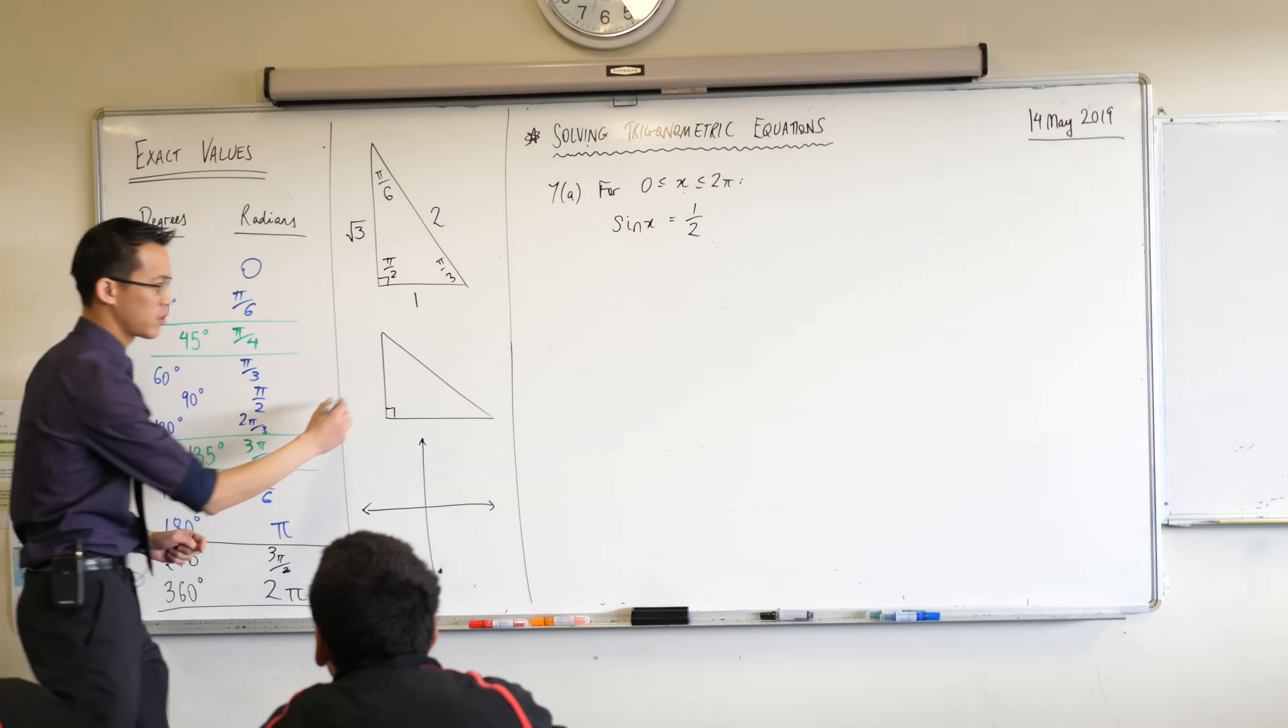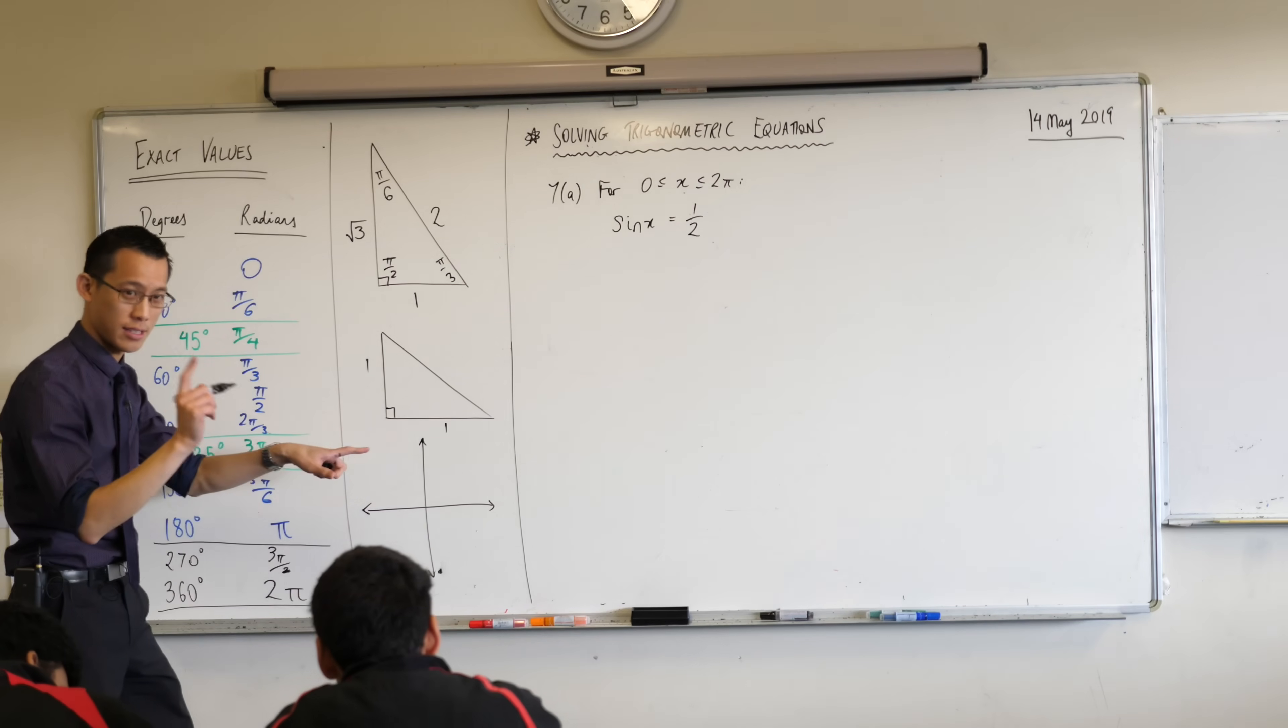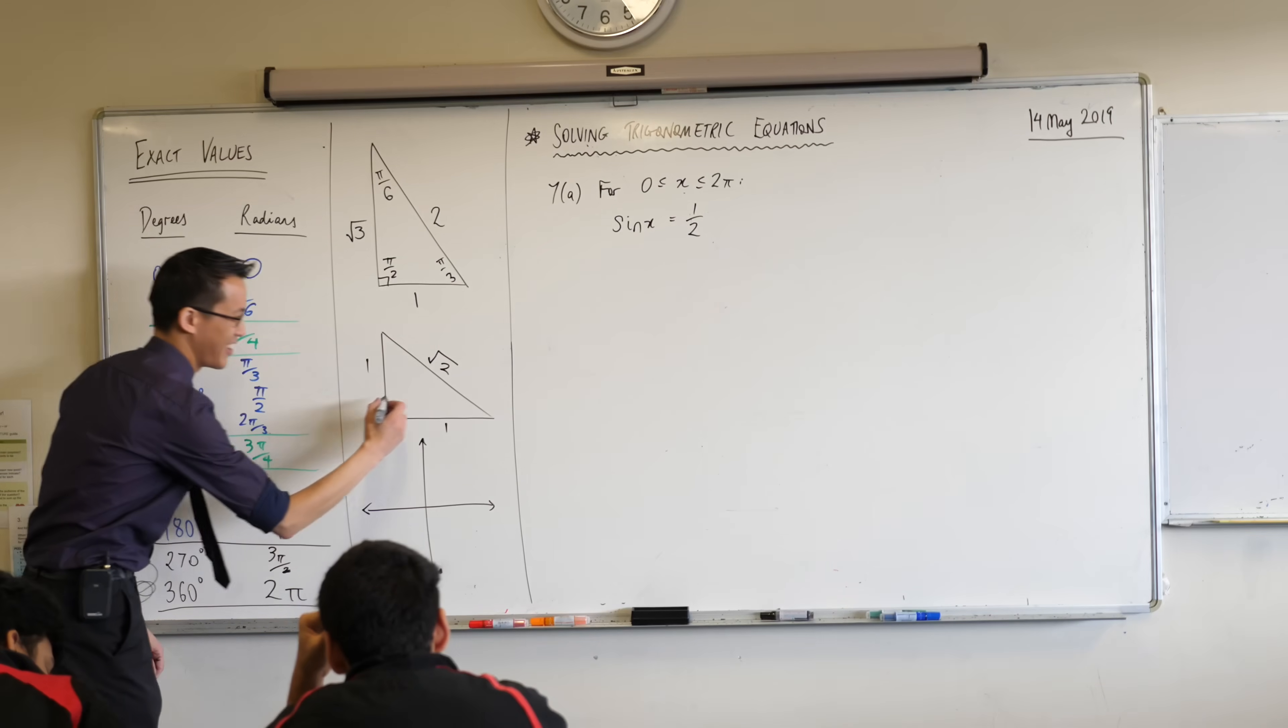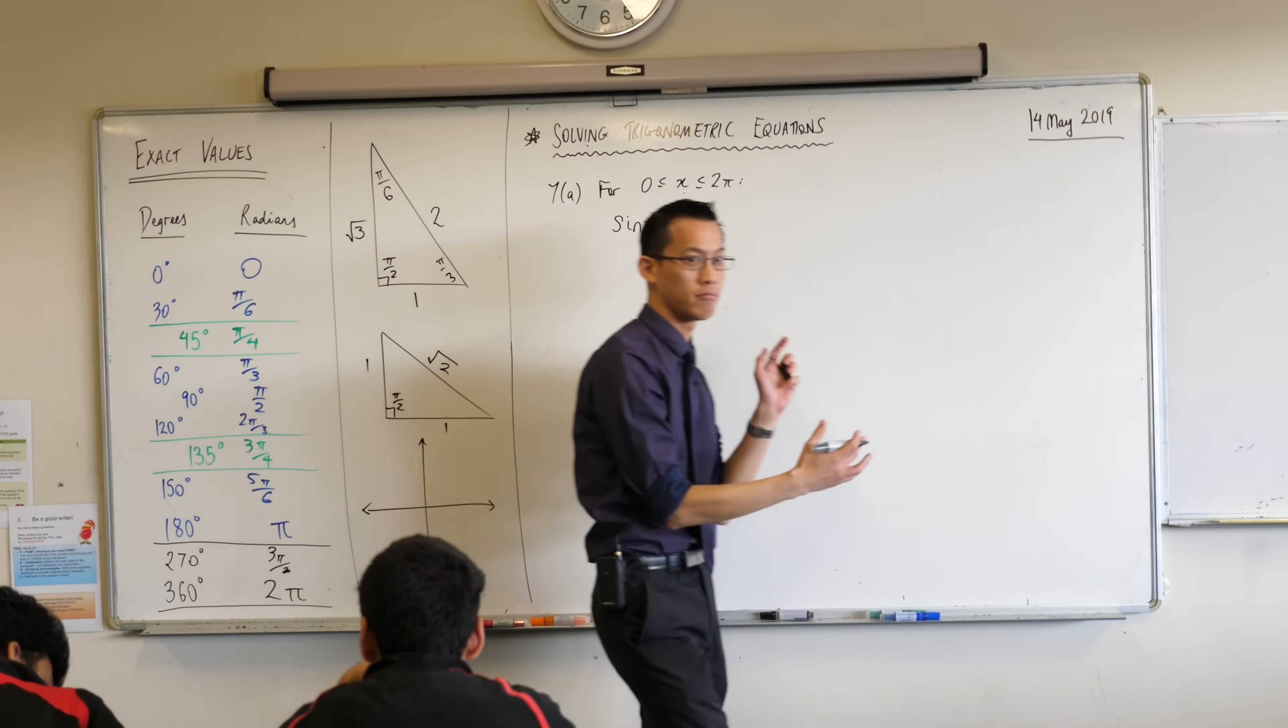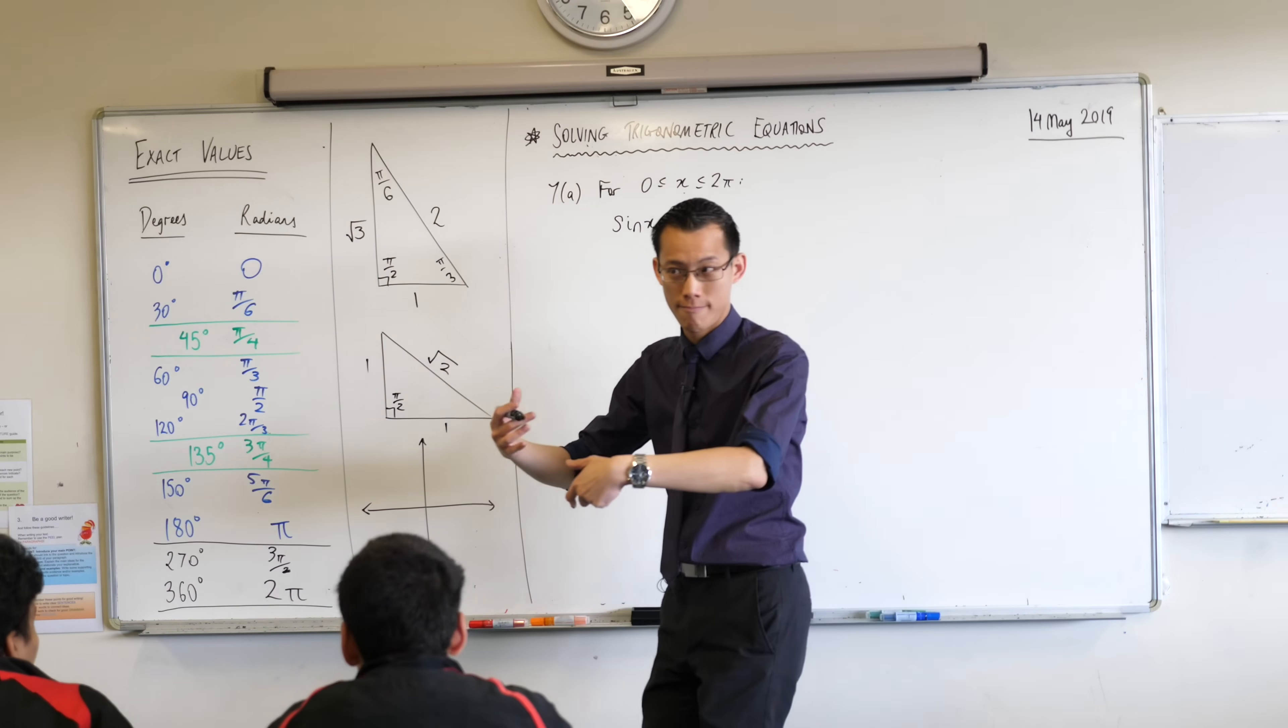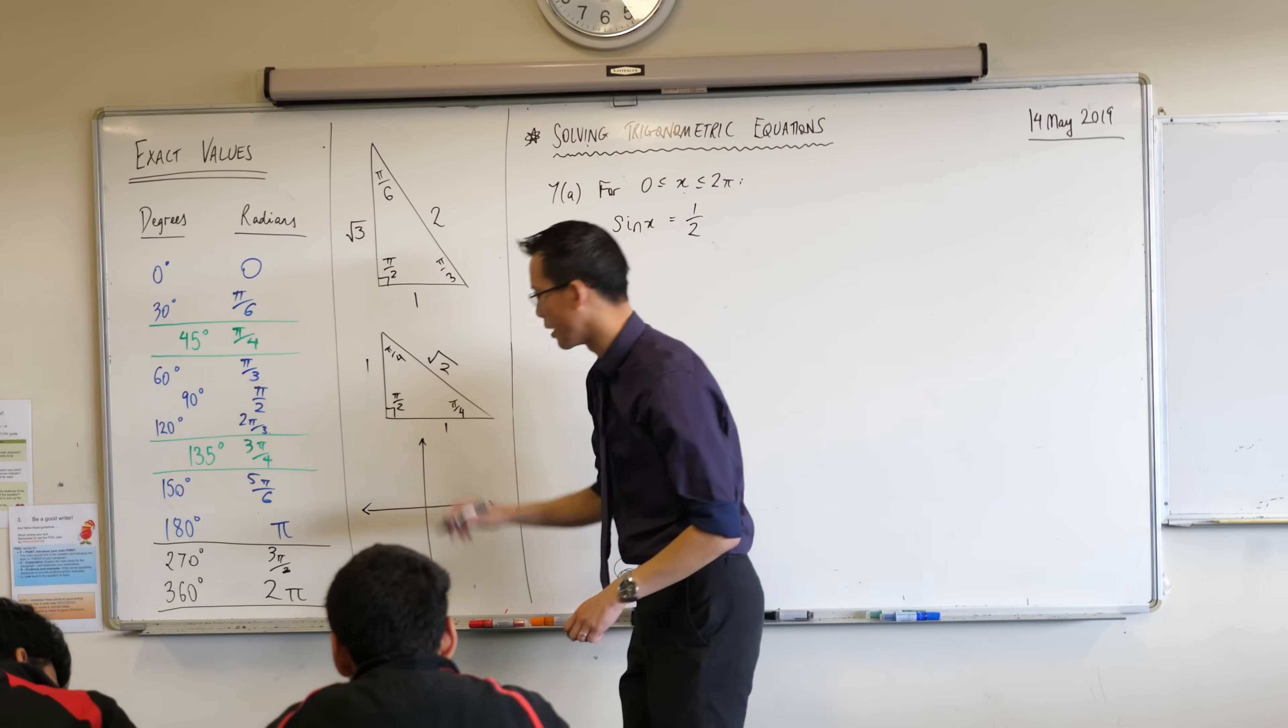You've also got this other triangle, the isosceles one, so if you make those both one then our hypotenuse is going to be the square root of 2. You've got your π/2 here which we already just looked at and then these two angles are usually 45 degrees. So we've already established that instead of 45 we should write π/4. π/4 here, π/4 also here.